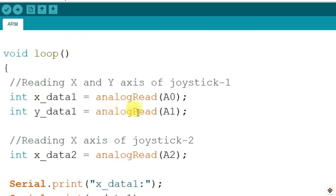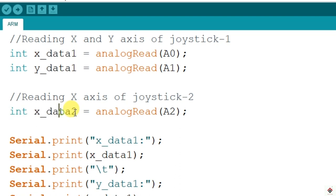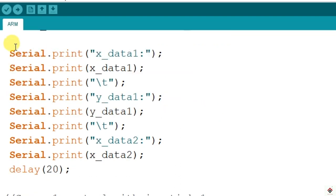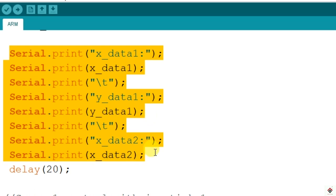And coming to the loop section, first we have read the values coming from the joystick. So this is for joystick 1, and this value is from joystick 2. And after this just printing all those values on the serial monitor.